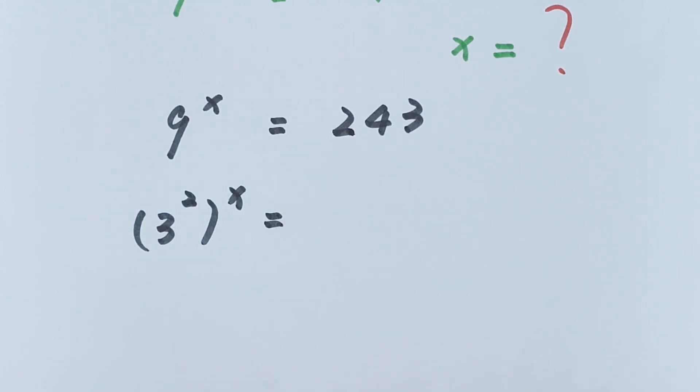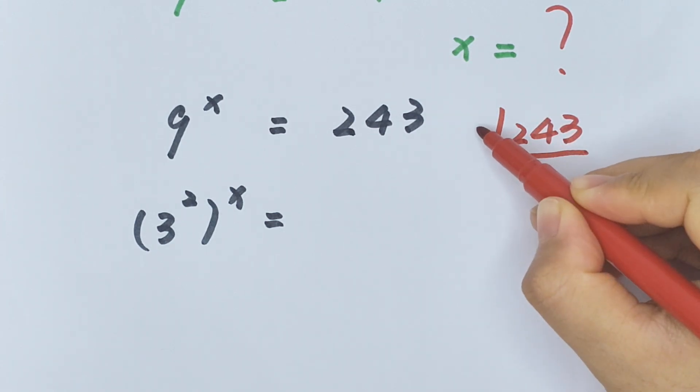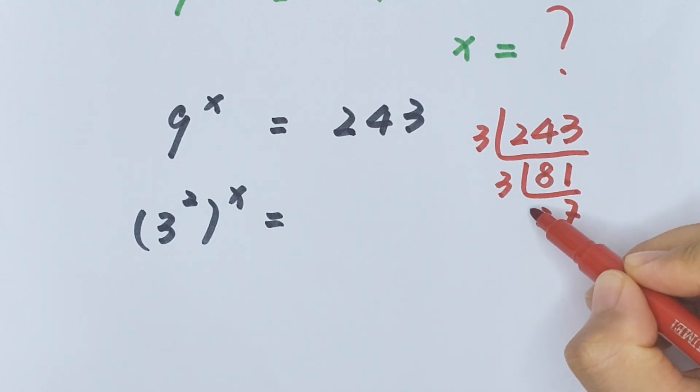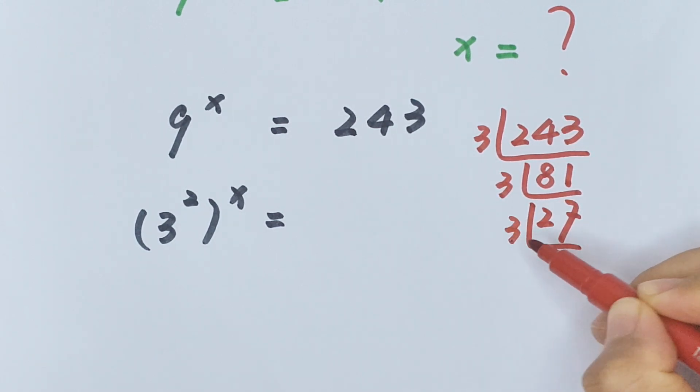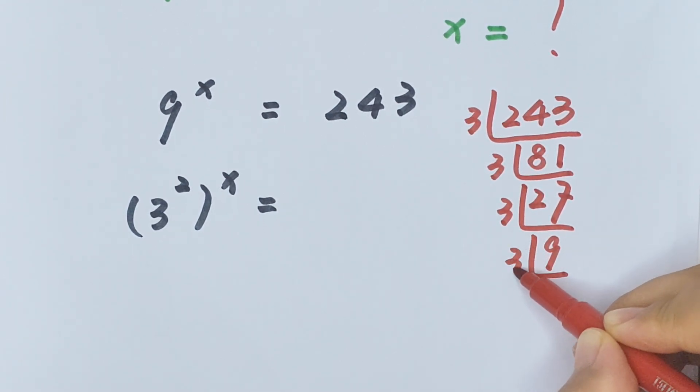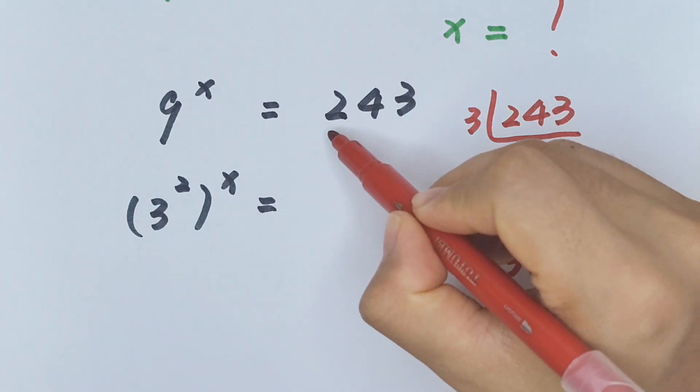243 divided by 3 is 81, then divided by 3 is 27, then divided by 3 is 9, then divided by 3 is 3. So 1, 2, 3, 4, 5 - it means this is the same as 3 to the power of 5.